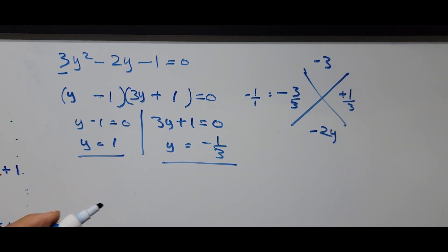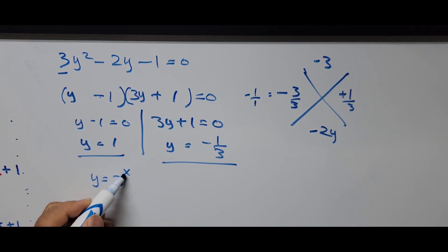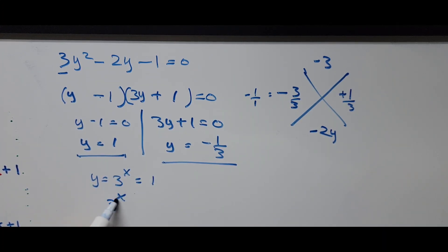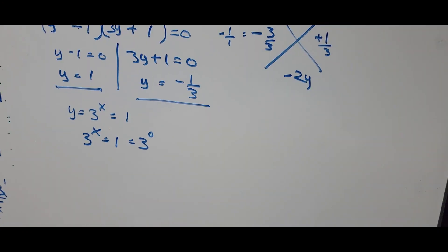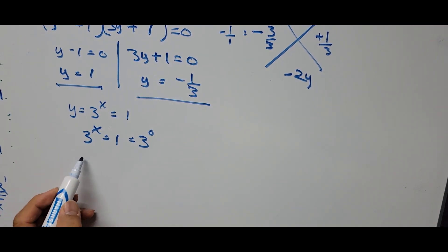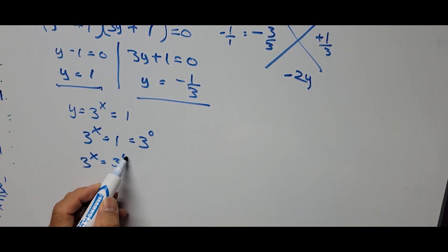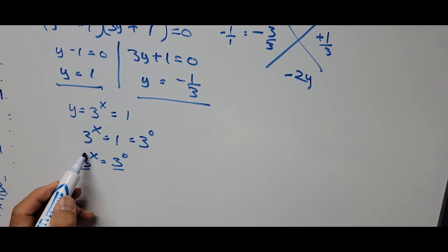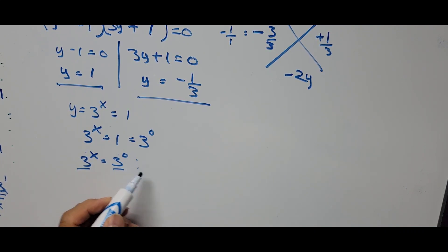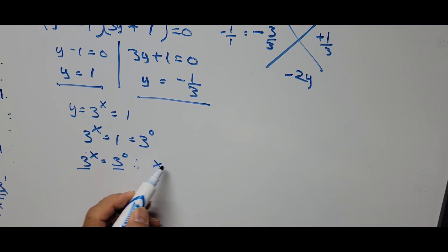Since y was substituted in place of 3 to the power x, we now substitute back. For y equals 1: 3 to the power x equals 1. Since 1 equals 3 to the power 0, the equation becomes 3 to the power x equals 3 to the power 0. Since the bases are the same, we equate the exponents, giving x equals 0.